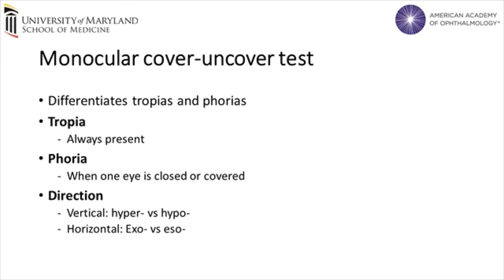The monocular cover-uncover test can differentiate whether a misalignment is a tropia or a phoria. A tropia is a deviation that is always present, even when both eyes are open and working together. A phoria, on the other hand,